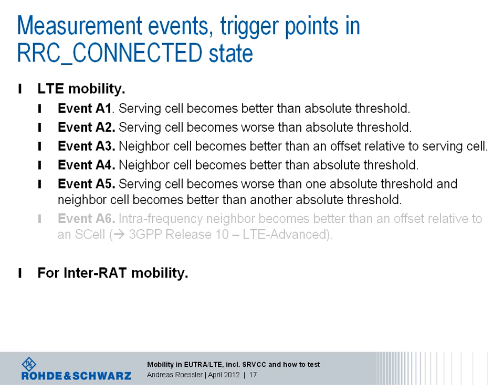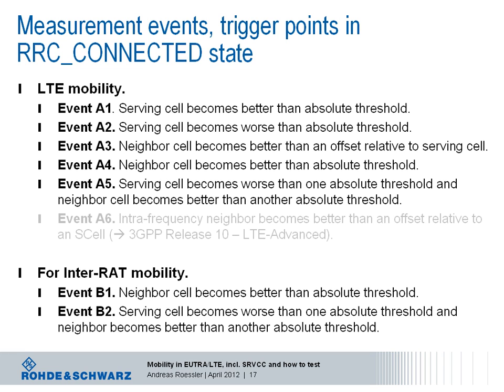In total there are six events defined in the latest specification, where the last one is being specified for LTE Advanced as of 3GPP Release 10. We will ignore that event for now. For inter-RAT mobility, two events are defined: B1 and B2. The LTE mobility events A1 through A5 are all defined for intra-frequency as well as inter-frequency measurements and handovers.